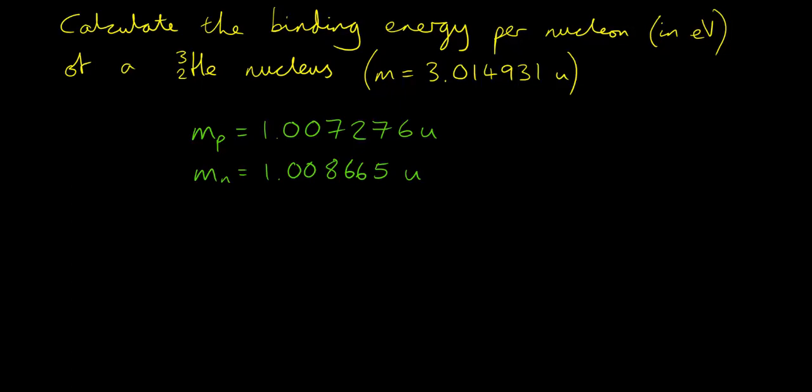Mass defects are very small compared to the mass of the actual nucleons themselves. So we have to use all of the available significant figures in our calculation in order to get a reasonable answer. Let's work out the combined mass of the protons and neutrons that would make up a helium-3 nucleus.